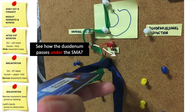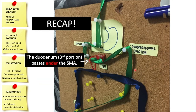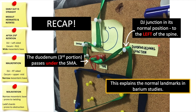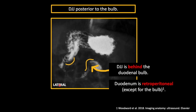Notice how the duodenum here passes under the SMA, and notice how the DJ junction comes to its normal position to the left of the spine. This duodenum passing under the SMA and the DJ junction to the left of the spine is shown here. On the lateral view, we see that the DJ junction is behind the duodenal bulb. The duodenal bulb is intraperitoneal, but the rest of the duodenum — the descending, horizontal or transverse, and ascending portions — are all retroperitoneal.